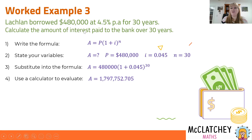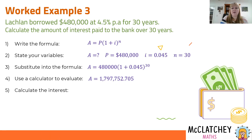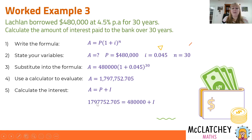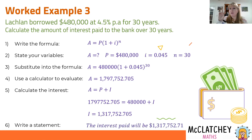But the question says to calculate the amount of interest, not the amount owing at the end. So we've found the amount owing at the end — now how do we find the interest? Remember: the amount at the end equals the principal plus all the interest earned. So we subtract $480,000 from the amount at the end to get the interest. Writing it as a statement with a dollar sign, two decimal places, and commas: the amount of interest paid was $1,317,752.71.